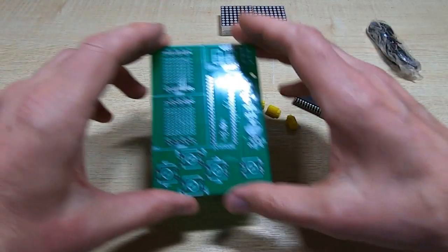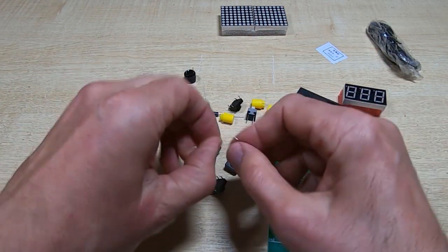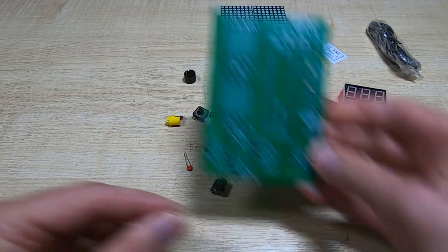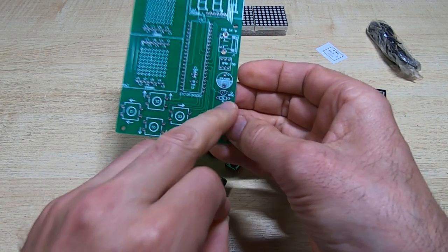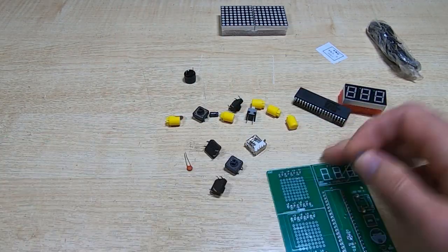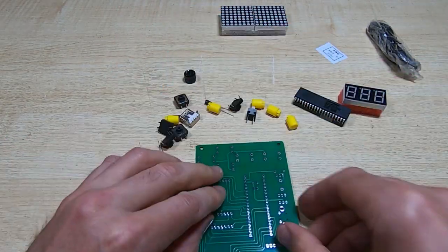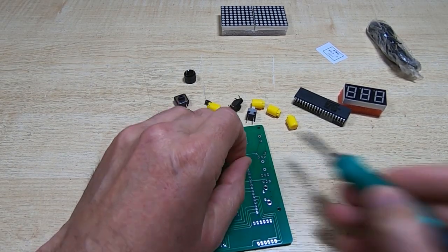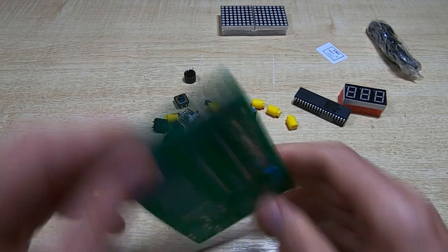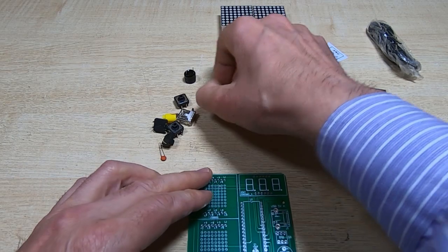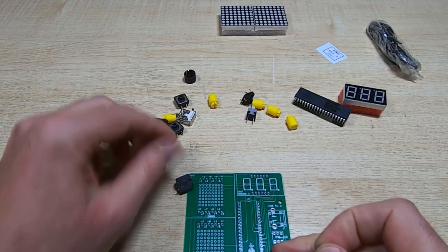I'll start by fitting the resistor. And looking on the board there's only one resistor position so it must go there. Okay, so that's the resistor fitted.